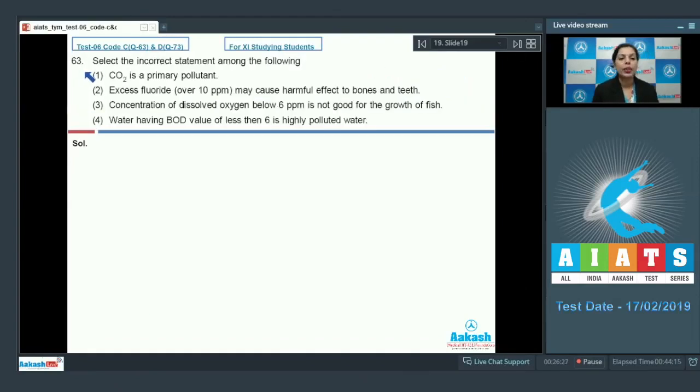Question number 63: Select the incorrect statement among the following. First is CO2 is a primary pollutant - yes, carbon dioxide is considered as primary pollutant. Excess of fluoride over 10 parts per million may cause harmful effect to bones and teeth - very true, the statement is also correct. We need to just find out the incorrect statement. Let's check next one: concentration of dissolved oxygen below 6 ppm is not good for the growth of fish. This dissolved oxygen or the DO value should be above 6 ppm, it should not be below 6 ppm because it is not good for the growth of fish. So this statement is also correct.